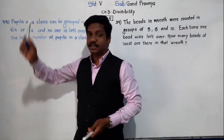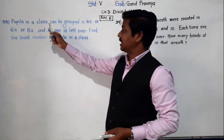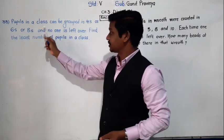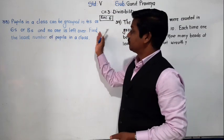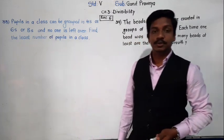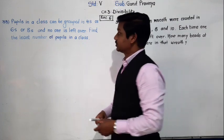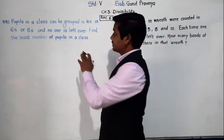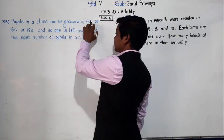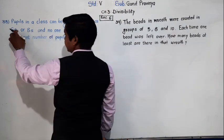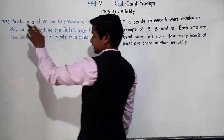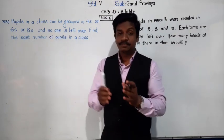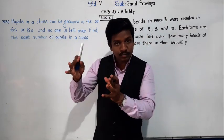See problem number 38. Pupils in a class can be grouped in 4s or 6s or 8s and no one is left over. Find the least number of pupils in a class. Pupils means students. Students in a class can be grouped in 4s, 6s, or 8s.